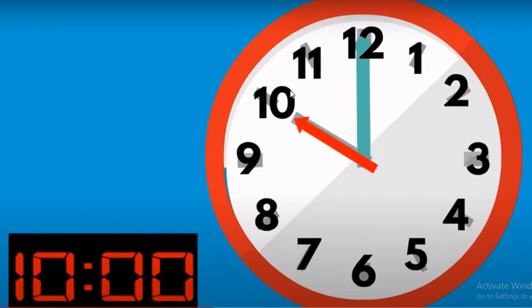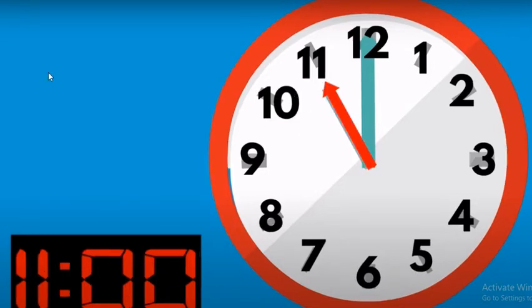Let's have a look at this clock. What time is it now? 10 o'clock — great job! Now it's 11 o'clock. That's right, very good. The red pointer is pointing at number 11, and the blue pointer, which belongs to the minutes, is pointing at number 12. Then it's 11 o'clock.